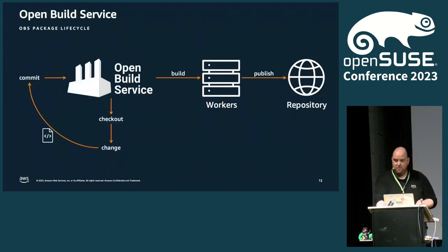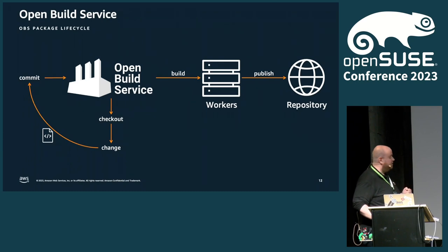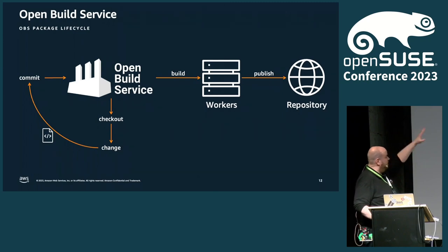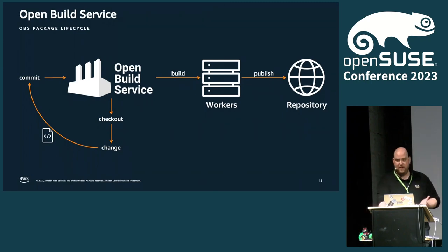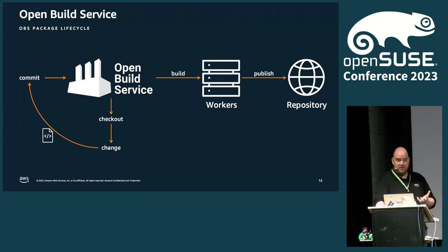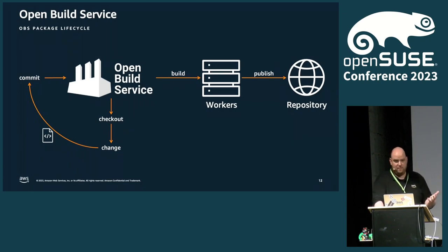I assume most of you are aware of OBS and the OBS package workflow, but just a quick refresher. I have my package in OBS. When I commit a change, OBS will build my package. Assuming it's successful, it then publishes my package. When I want to change something, I check out my code, make a change, commit, OBS builds, OBS publishes — and that's my whole process. I can iterate as much as I want.